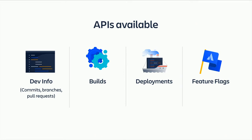The third API is targeted around deployments — tracking how software is released. You build something, build an artifact, and it starts to get deployed through different environments and stages. We have an API for enabling you to track deployments. Tools like Octopus Deploy, Bitbucket Pipelines, and CircleCI are examples.